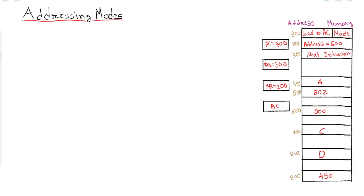For that we have to use addressing modes. The simple question is: what is the need of addressing modes? Addressing modes are helpful in various scenarios, such as giving the programmer a very large addressing space. For example, if we are using indirect addressing mode then we can use 16-bit, or in many cases even 32-bit addressing.